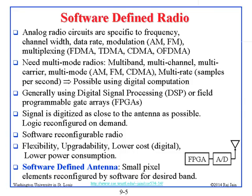The next development after software-defined radio is software-defined antenna. Right now antennas are analog — you cannot use an AM antenna for FM because they are designed for different frequencies. With software-defined antennas, tiny chip-scale pixel elements combine together to form a larger or smaller antenna, reconfigured by software for the desired band. This is the current trend in wireless: everything is being software-defined.